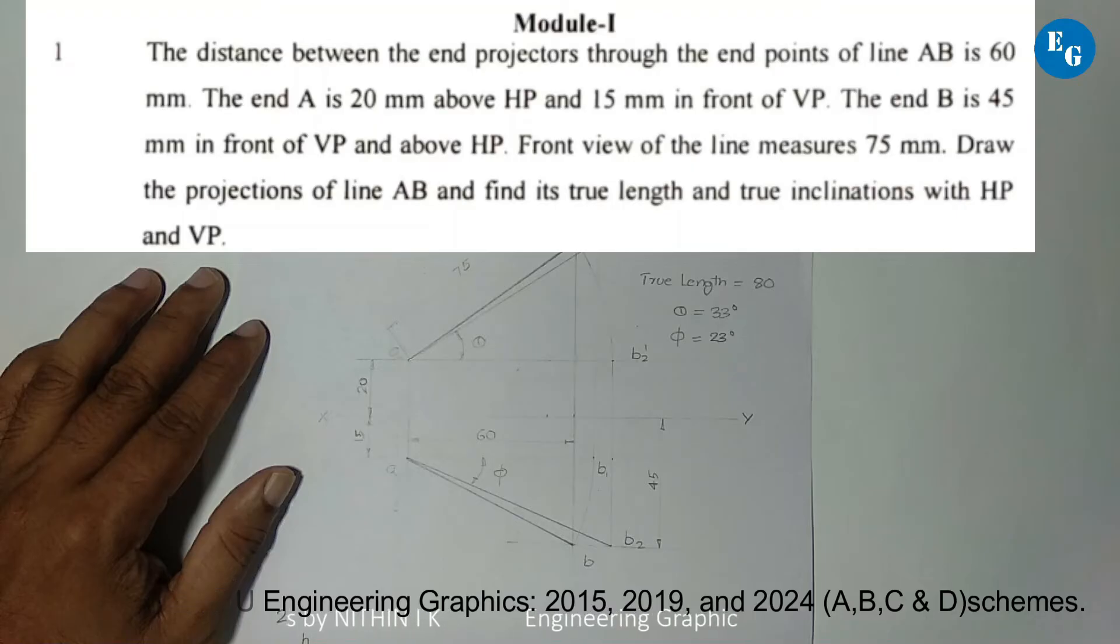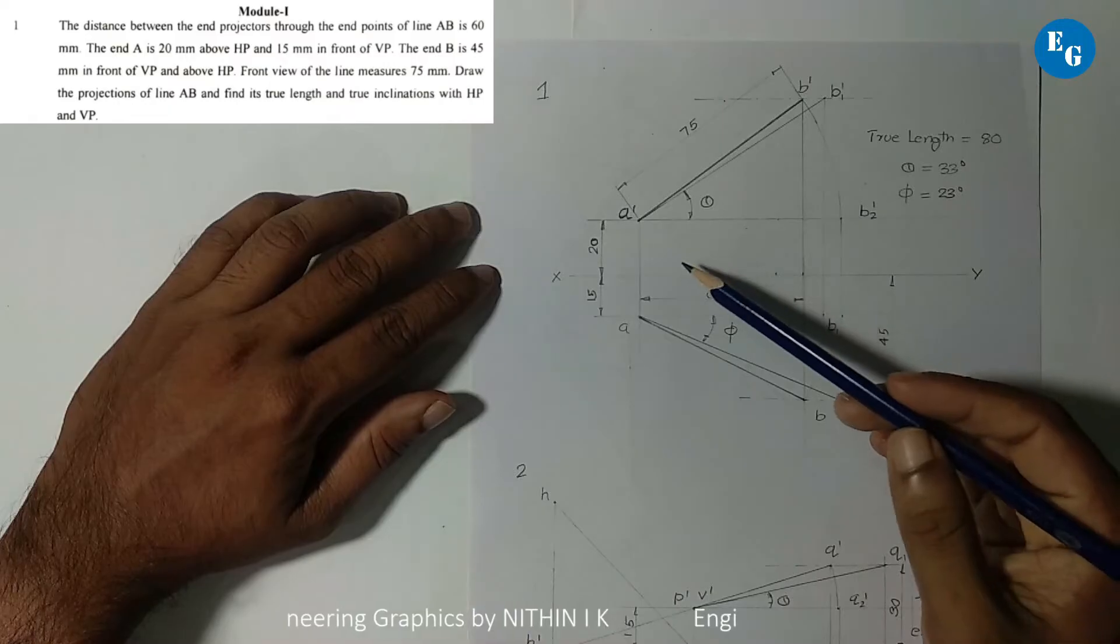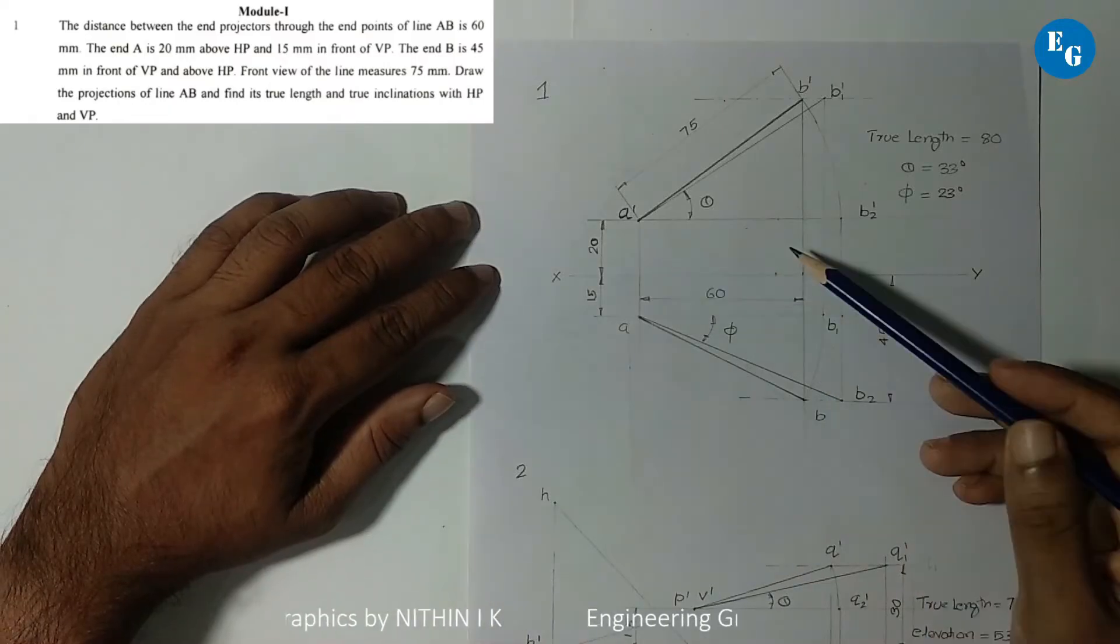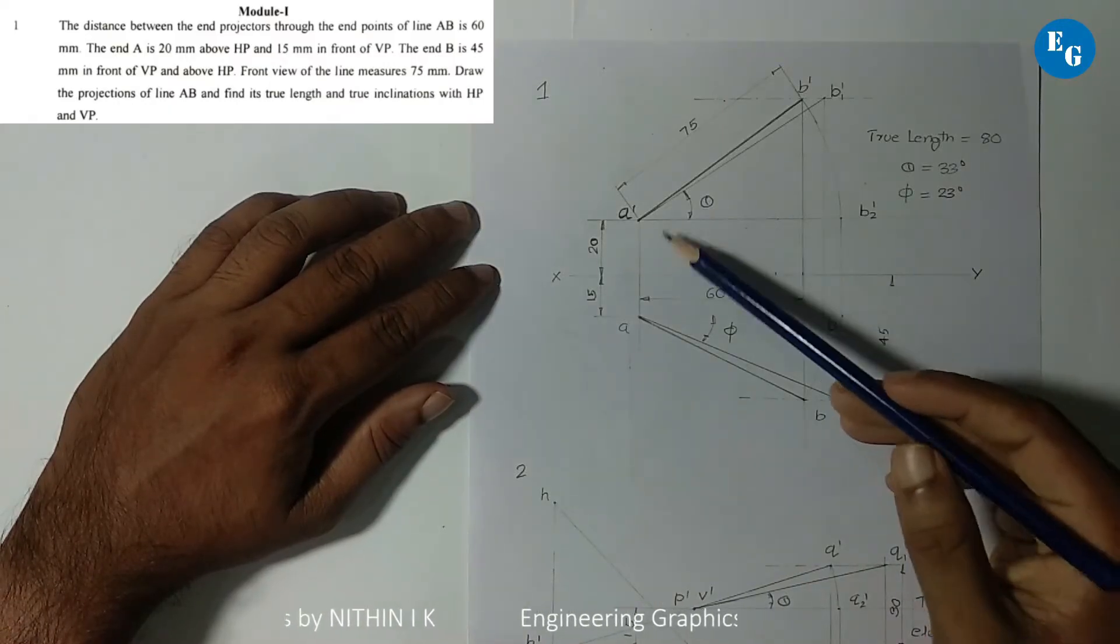Draw the projection of line AB and find its true length and true inclination with HP and VP. The question comes in the direction of a position.